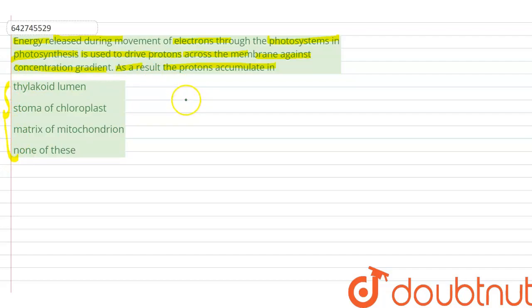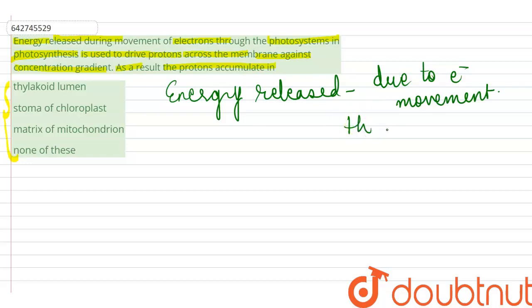So what happens in case of photosynthesis, the energy that is released due to the movement of electrons, the energy released due to the electron movement through the photosystems in photosynthesis.